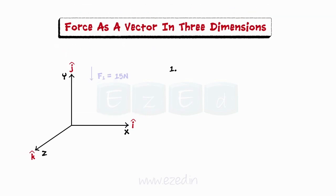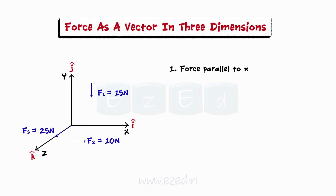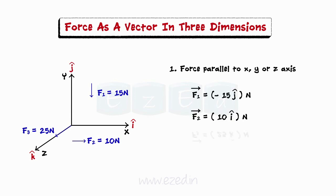The first type is when the force given is parallel to any one of the axes. When a force is parallel to one of the coordinate axes, it can be directly written in terms of the unit vector along that direction. For example, the three forces shown alongside can be expressed as shown.